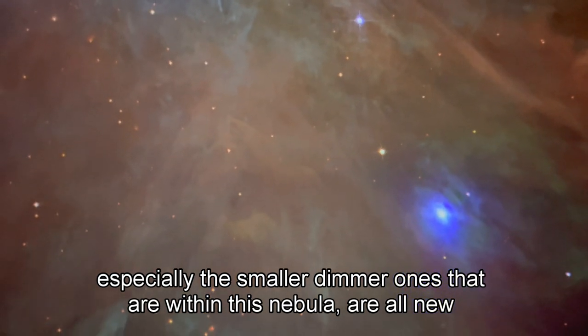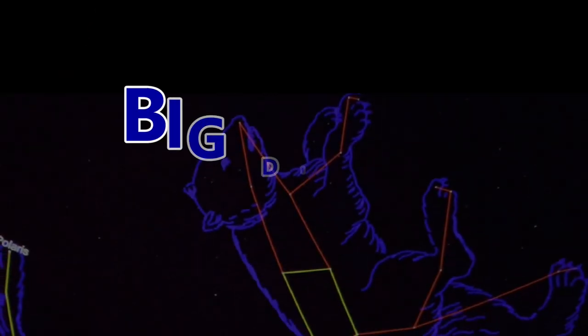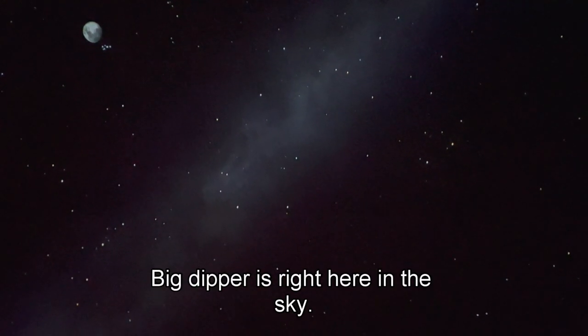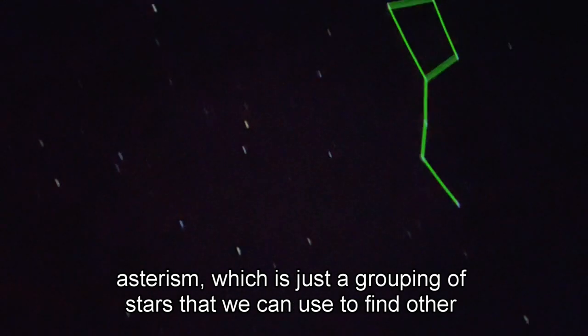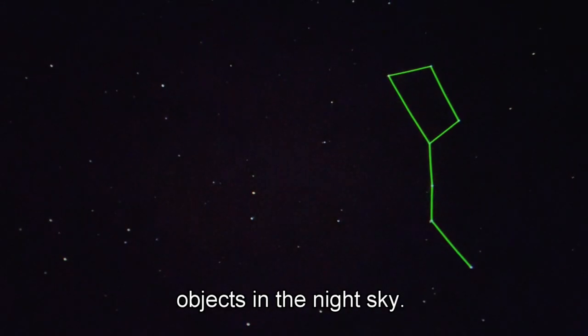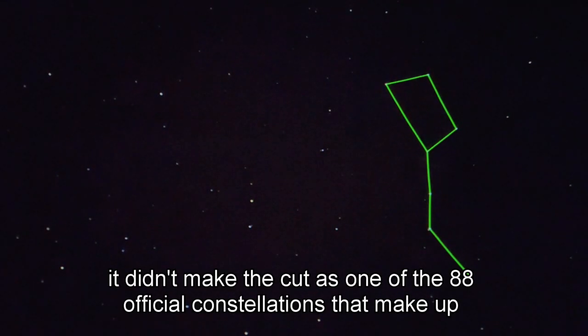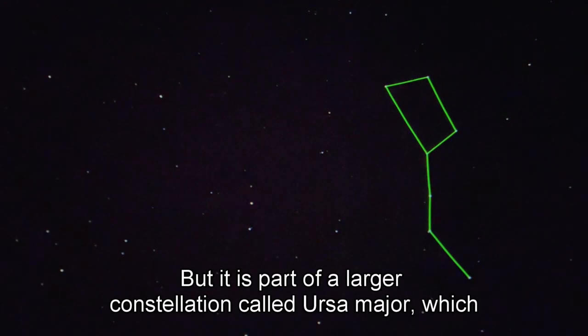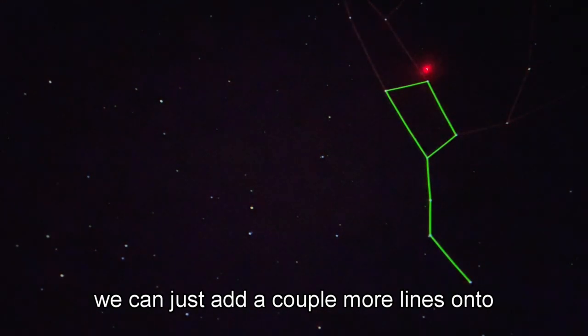Our Big Dipper is right here in the sky. Technically, the Big Dipper is not a constellation. It's what we call an asterism, which is just a grouping of stars that we can use to find other objects in the night sky. It didn't make the cut as one of the 88 official constellations that make up our sky, but it is part of a larger constellation called Ursa Major.